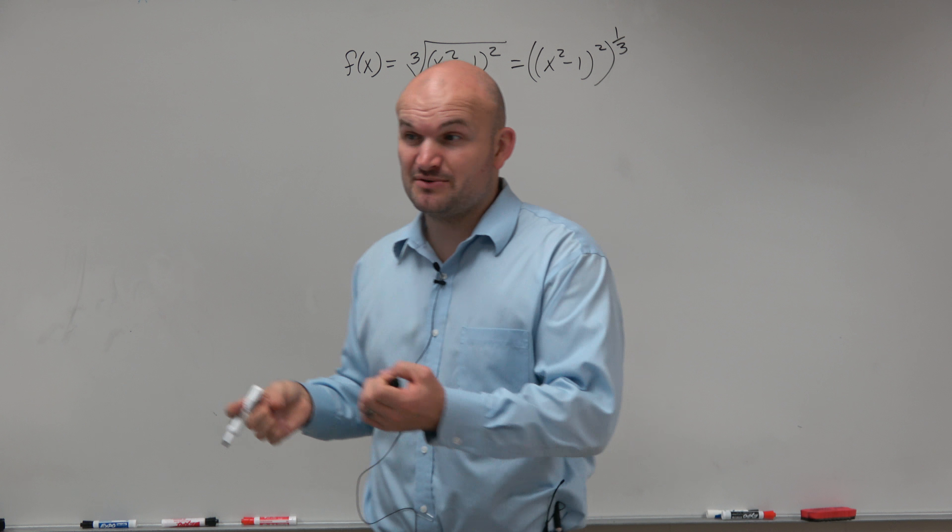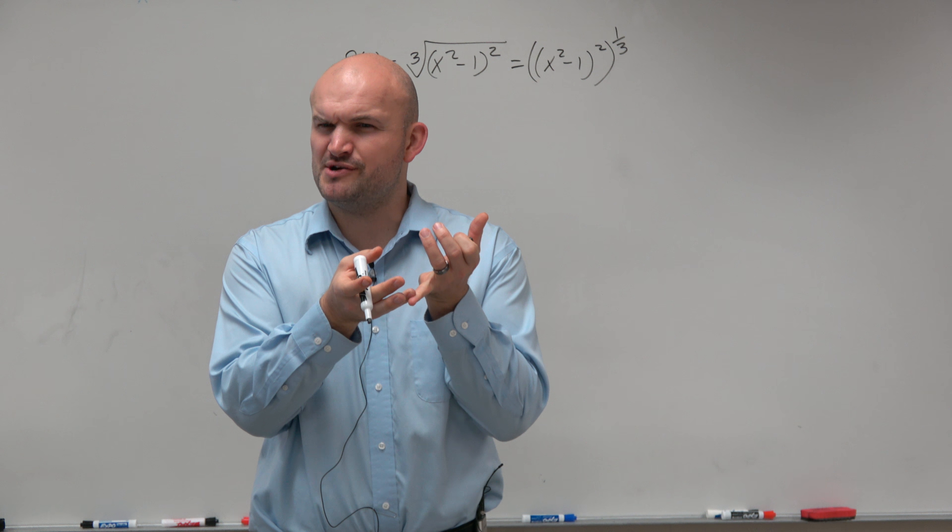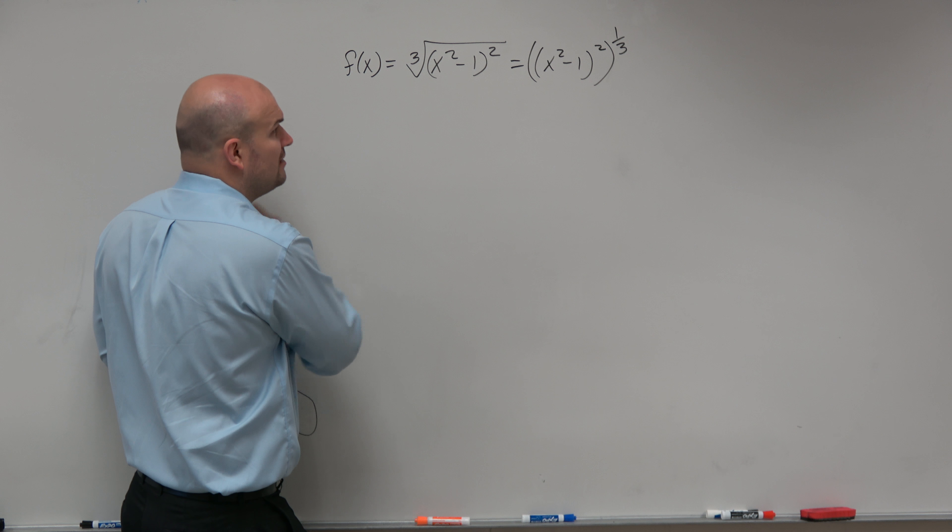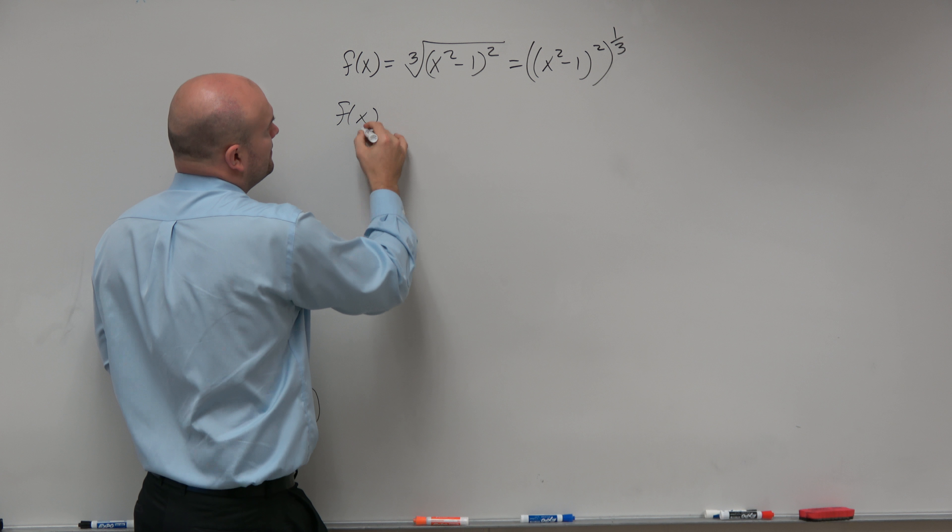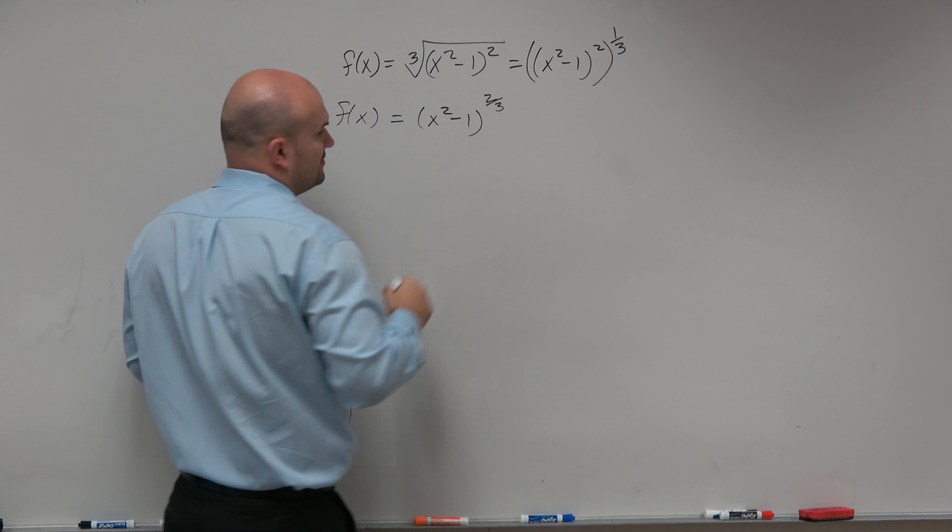Now that's helpful, because using the rules of exponents, what happens when I have an exponent raised to another exponent? You multiply them. Can we multiply 2 times 1/3? Yeah, that's actually not that bad. So therefore, this is (x² - 1) raised to the 2/3.